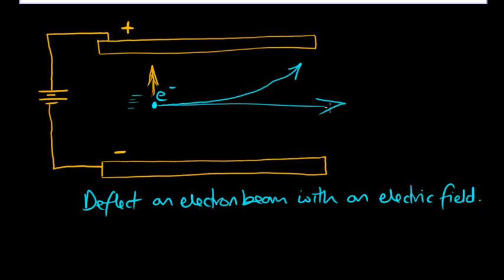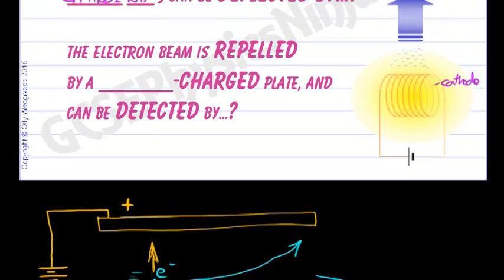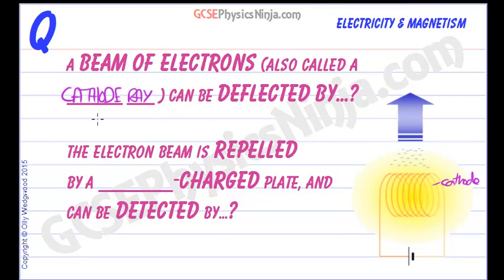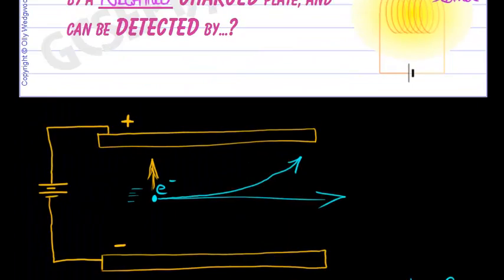How could you detect the electron beam? The electron beam is repelled by a negatively charged plate and attracted by a positively charged plate. And how can these electron beams be detected?